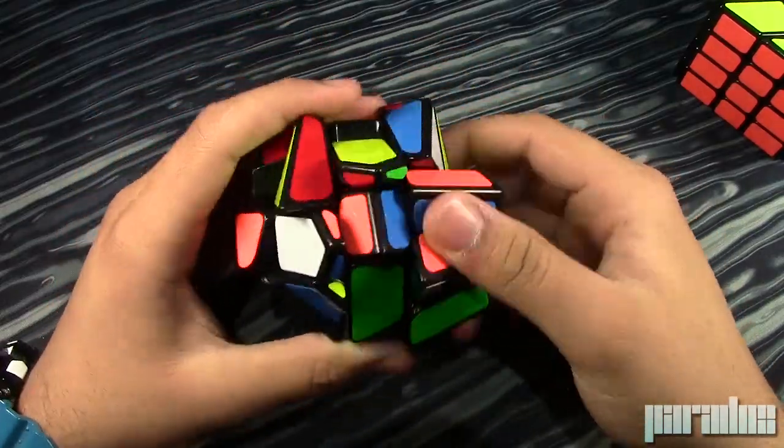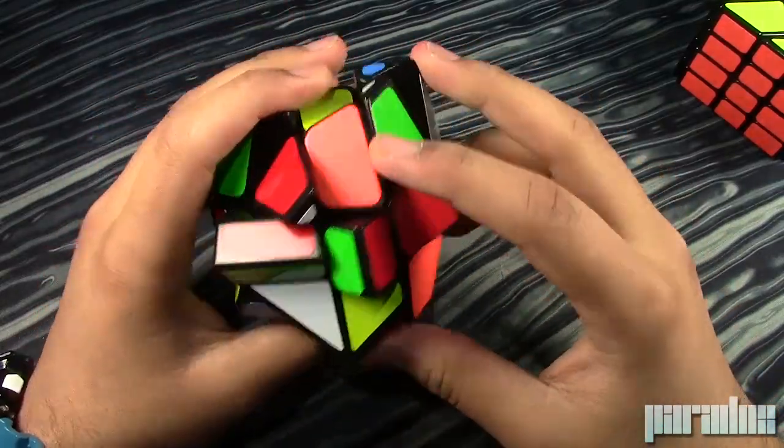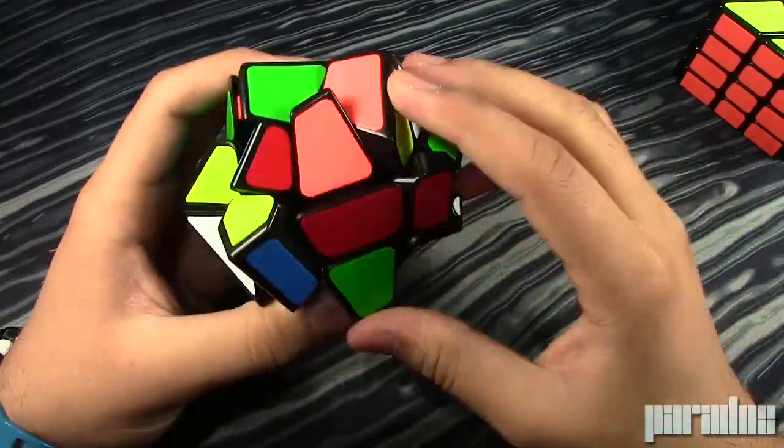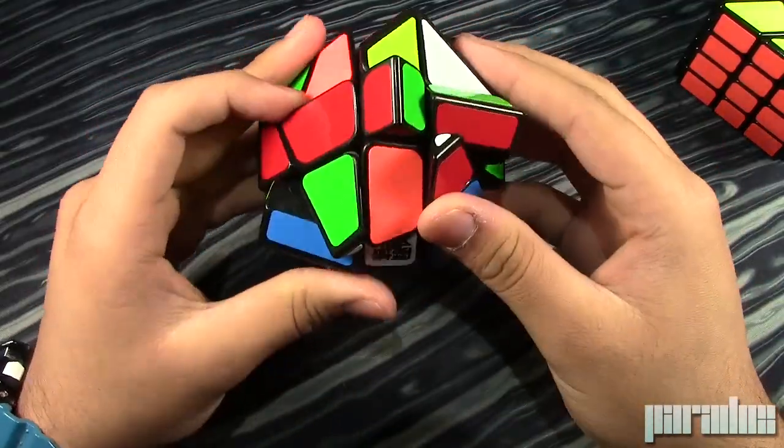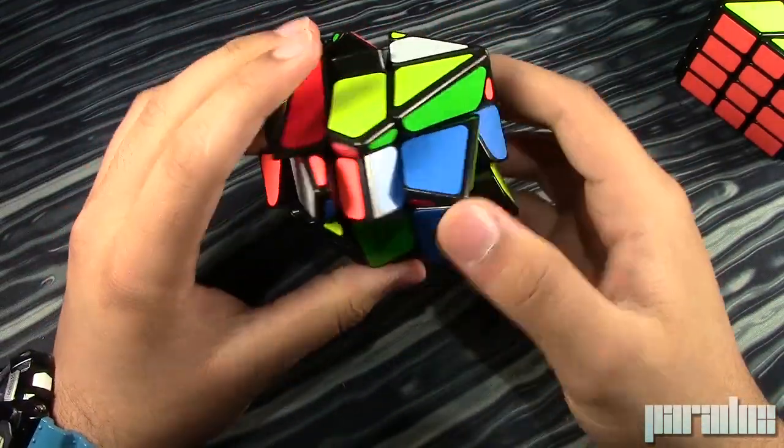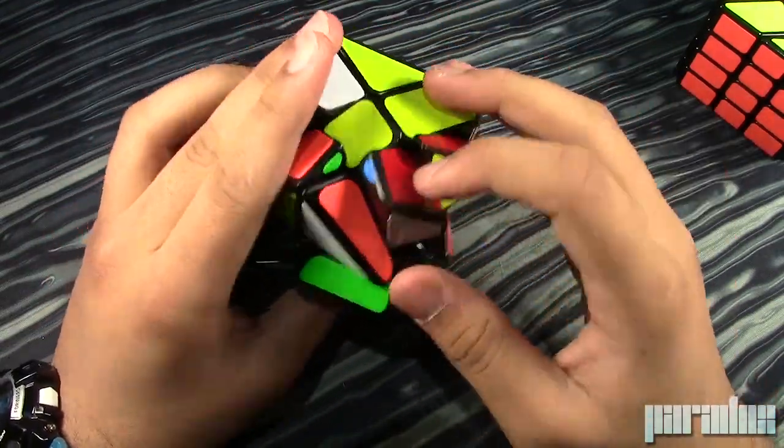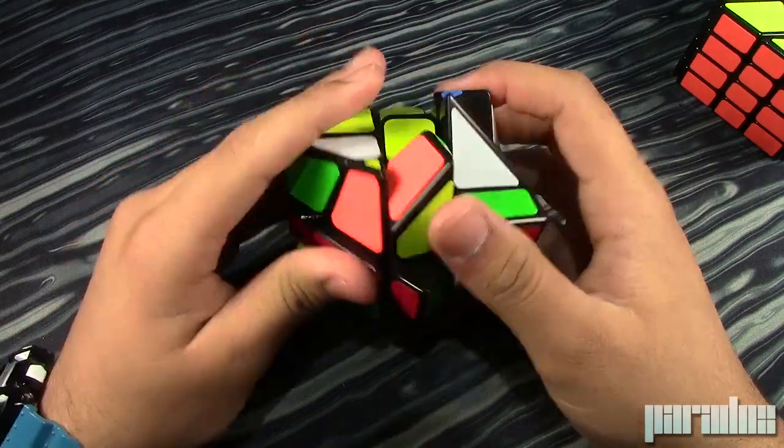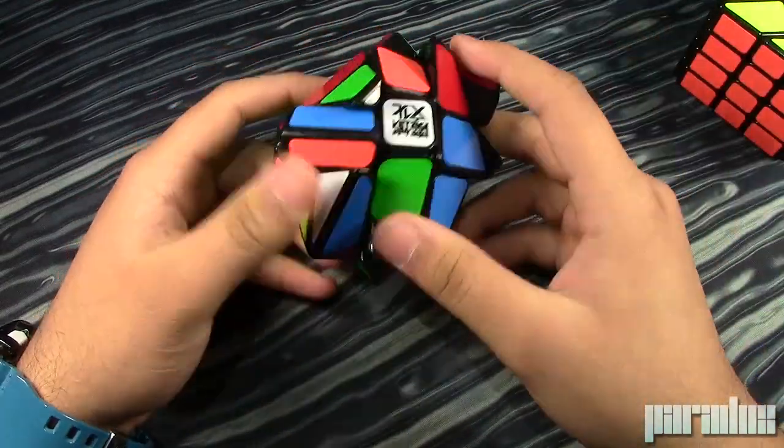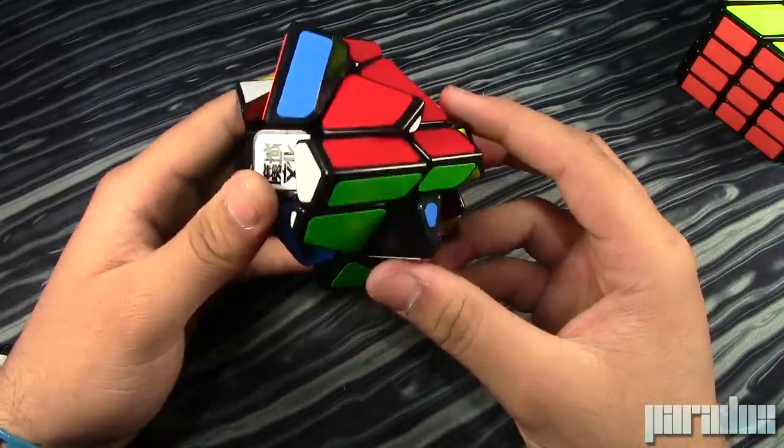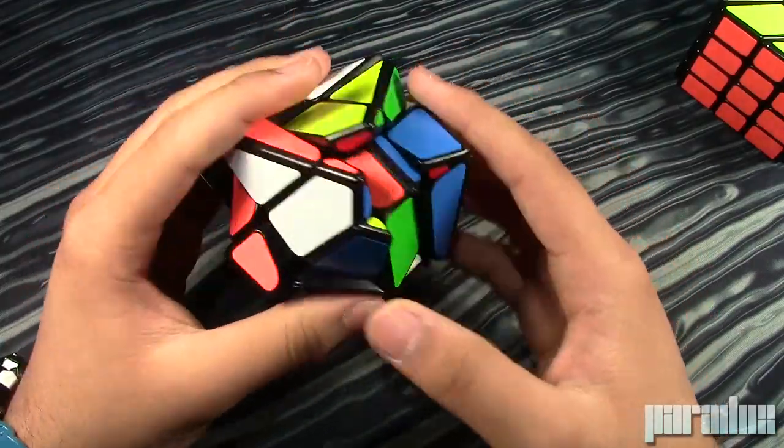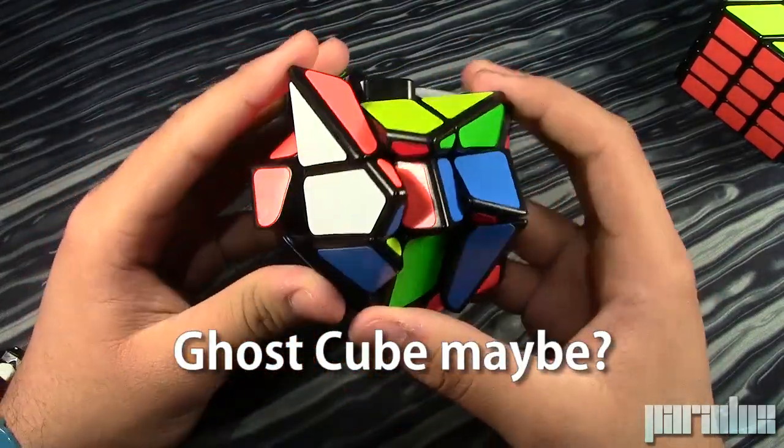So first, I'd have to align the centers, which would be just one move each. So here I've got all the centers aligned. And it looks like an axis cube. Some of the pieces are like an axis cube. And when I first looked at it, I thought it was an axis cube. It looked very familiar, the shape. It looks like an axis cube mixed with another puzzle.